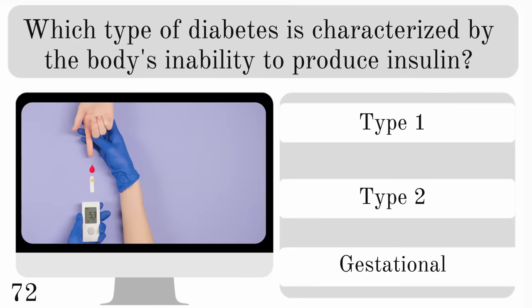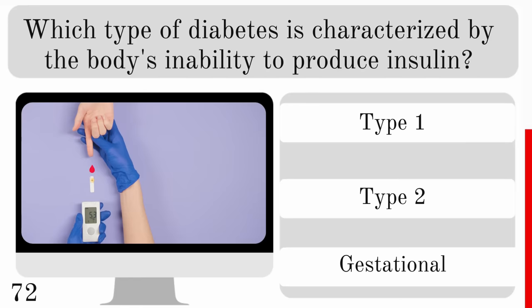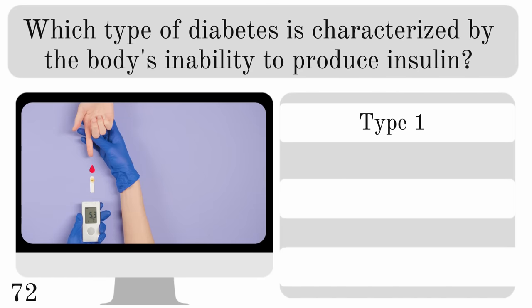Which type of diabetes is characterized by the body's inability to produce insulin? Type 1, type 2 or gestational? The answer is type 1.